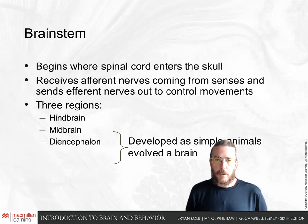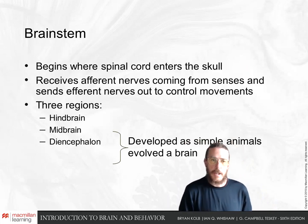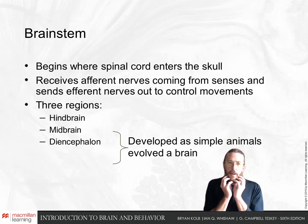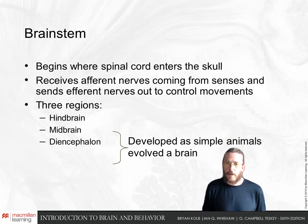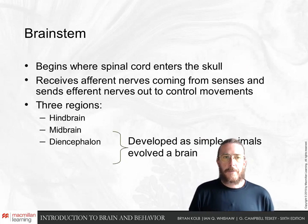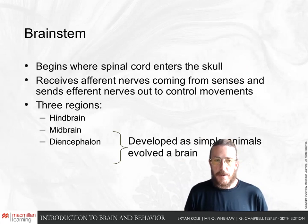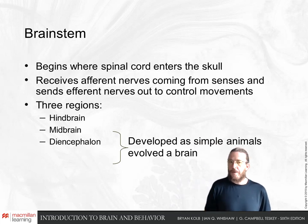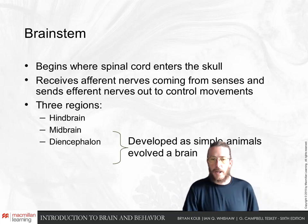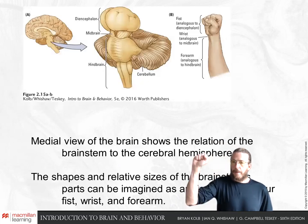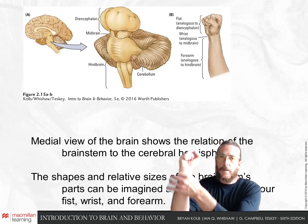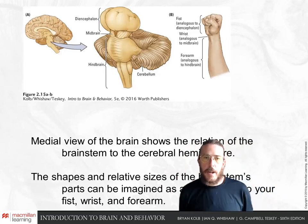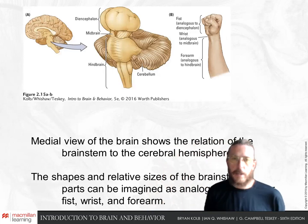The brain stem begins where the spinal cord connects to the skull. It receives afferent nerves from the senses around our face — like our eyes and nose — and sends efferent nerves out to control our movements. The brain stem has three regions: the hindbrain, midbrain, and diencephalon. Think of the brain stem like an upright fist: the wrist is the midbrain, the fist itself is the diencephalon, and the forearm is the hindbrain where the cerebellum and pons are.